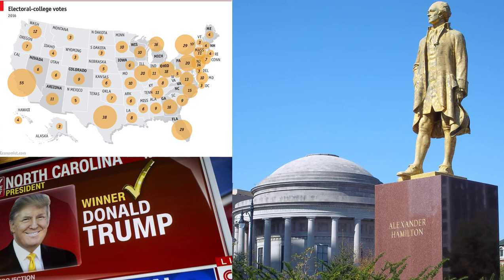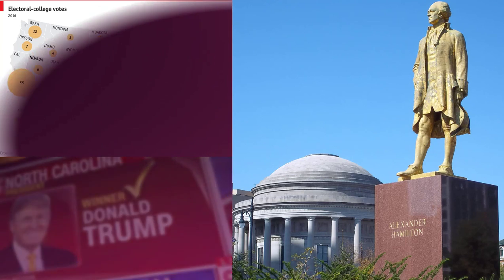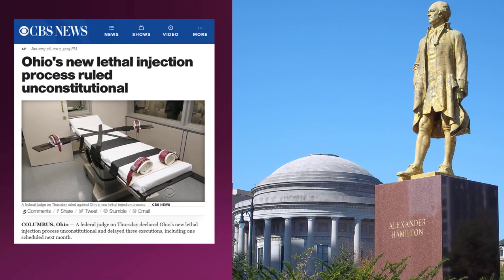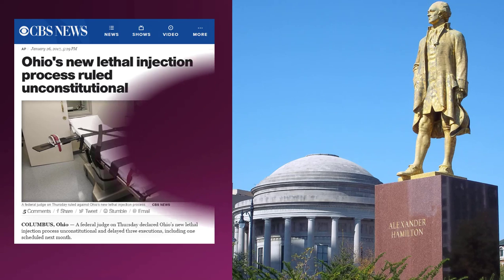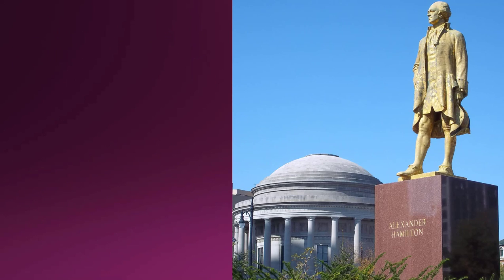In Federalist 78, Hamilton discusses judicial review — the legal doctrine that gives the judiciary, the courts, final say over the constitutionality of laws passed by Congress. The Constitution itself does not mention this doctrine or specify which branch has the power to determine if laws are unconstitutional and invalidate them.